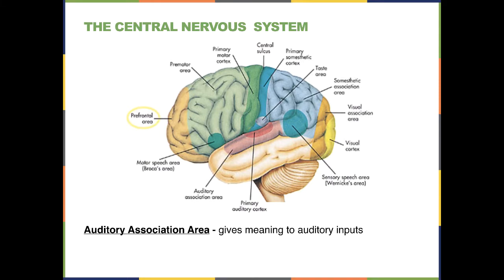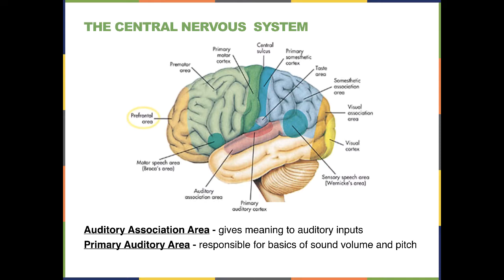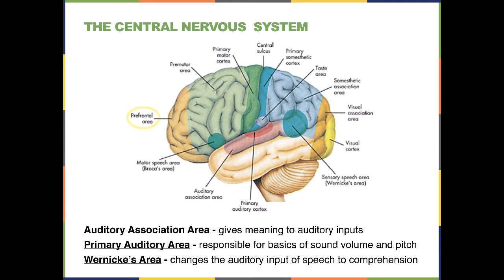The auditory association area gives meaning to auditory input coming from the primary auditory cortex, which handles the basics of sound such as pitch and volume. Wernicke's area — also called the speech sensory area — is right behind the auditory association cortex. It is very important because it converts the auditory input of speech into comprehension, allowing us to understand what someone is saying. When Wernicke's area is damaged, people can hear words but cannot understand what is being said to them.